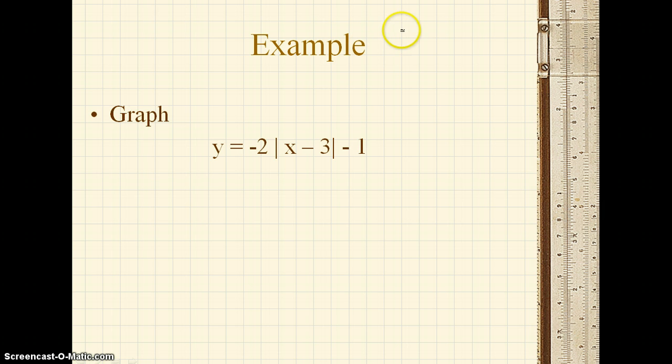So again, the basic formula is y is equal to a times the absolute value of x minus h plus k. Okay, so the first thing is that it's absolute value, which will produce a v shape, or an upside down v, which I will call a mountain.